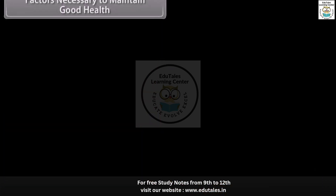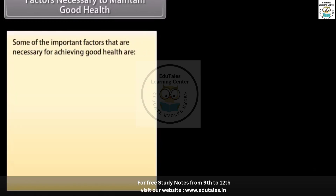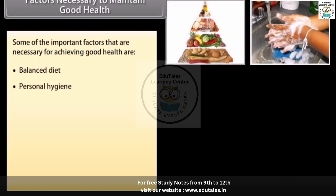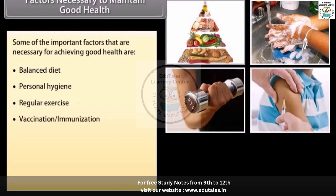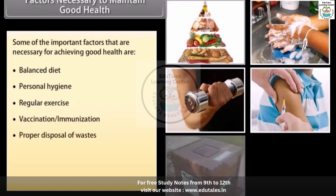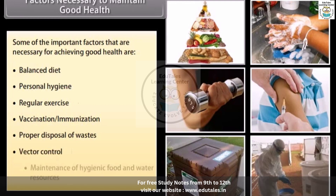Some of the important factors necessary for achieving good health are: balanced diet, personal hygiene, regular exercise, vaccination and immunization, proper disposal of wastes, vector control, and maintenance of hygienic food and water resources.